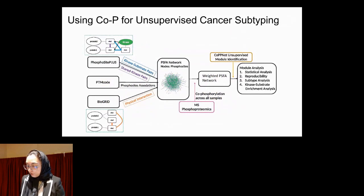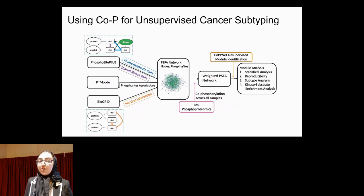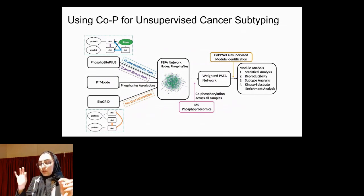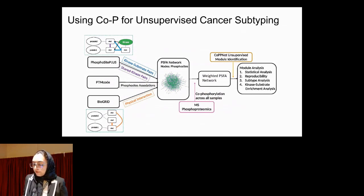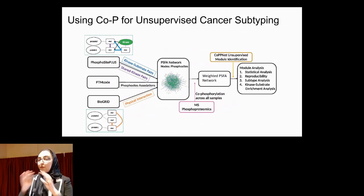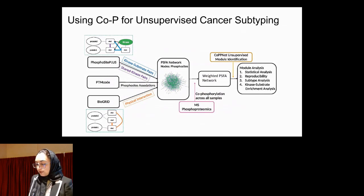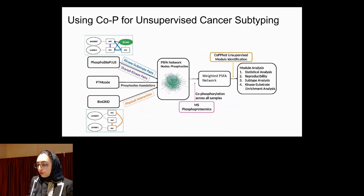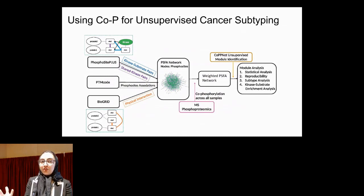We developed a framework that creates a site-centric network — the phosphosite functional association network — in which the nodes are phosphosites. Connections between sites come from different functional associations: if two sites share a kinase, if they are co-evolving, or if they reside on two physically interacting proteins, we place an edge between them. We assume this network represents functional associations between all these sites.